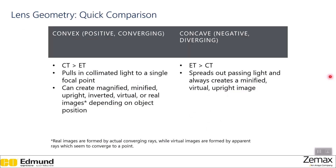Now that we've covered the two main lens geometry types, here's a brief comparison. The convex lens — positive or converging — has a thicker center and thinner edges, and pulls in collimated light to a single focal point, creating real or virtual images. A concave lens — negative or diverging — is thicker on the edges, spreads out passing light, and always creates a minified virtual upright image. A real image is formed by actual converging rays, while virtual images are formed by apparent rays which seem to converge to a single point.